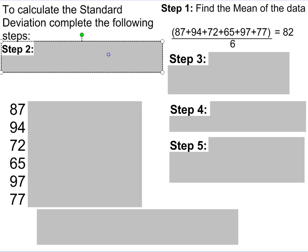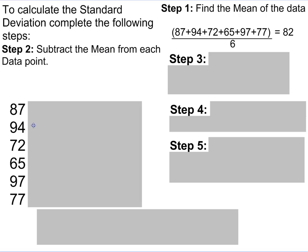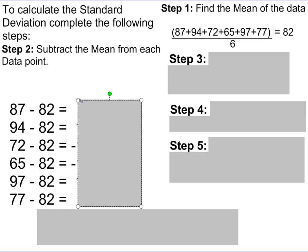The second step is to subtract that mean from each of the data points. So in this case, subtracting each of the points, we end up getting 5, 12, negative 10, negative 17, 15, and negative 5. This is how far they are away from the mean.